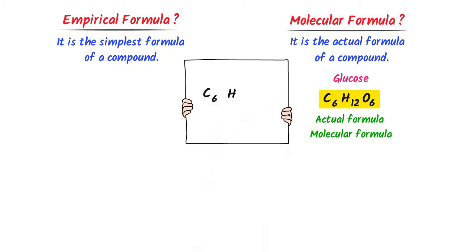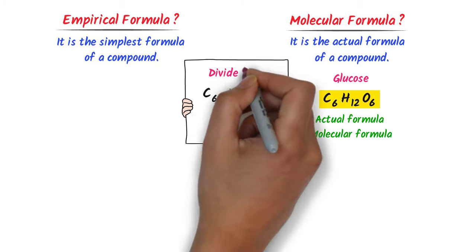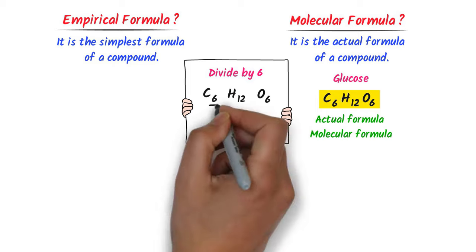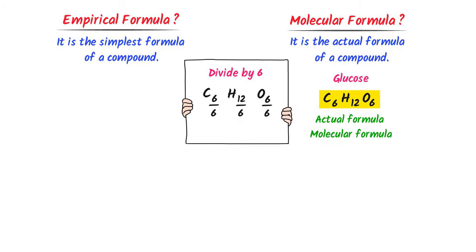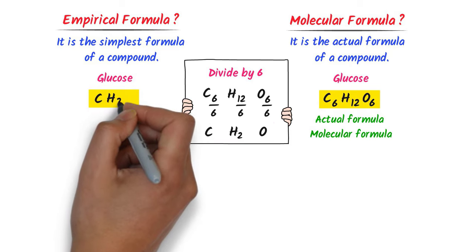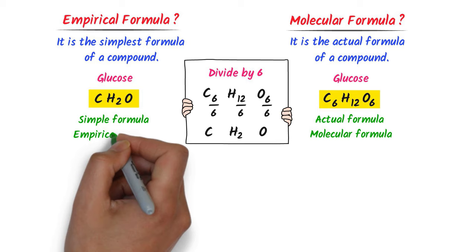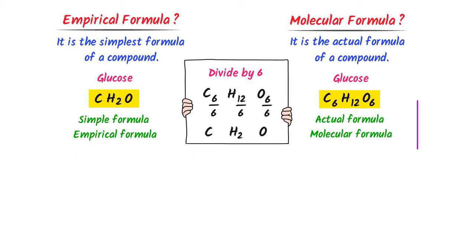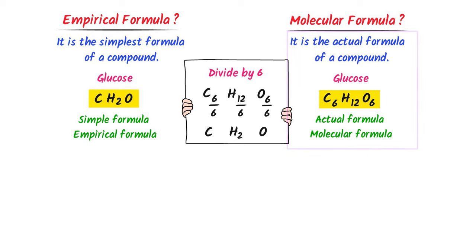Looking at the formula of glucose C6H12O6, the subscript of carbon is 6, that of hydrogen is 12, and that of oxygen is 6. We can divide these subscripts by 6 — 6/6, 12/6, and 6/6 — to get CH2O. I have simplified the molecular formula C6H12O6 to CH2O. This CH2O is the simplest formula of glucose, hence it is the empirical formula of glucose.